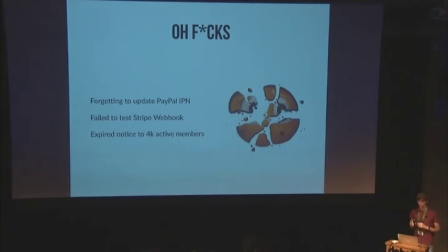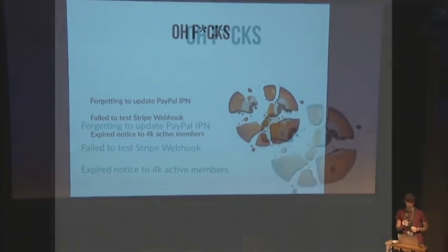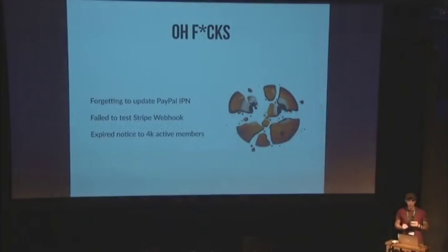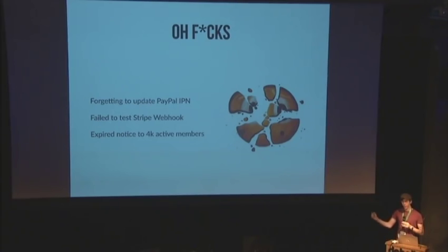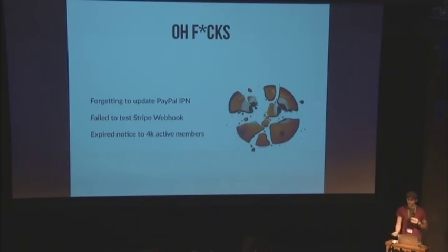The first one: forgetting the PayPal IPN link. When we launched the new site CGCookie5, we upgraded to a different version of PayPal subscription services. The IPN — Instant Payment Notification — is basically the system PayPal uses where, when they receive a recurring payment, they notify our system to update the person's account. That IPN link is hard-coded in the payment profile, and we forgot to update it. So for the first month and a half, every single person that subscribed via PayPal on the new site didn't update correctly — they sent us their money, but the site didn't know it.